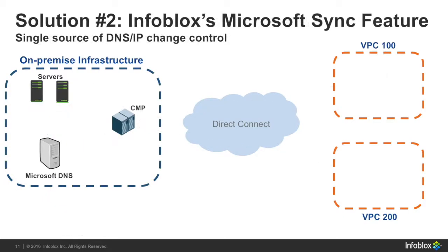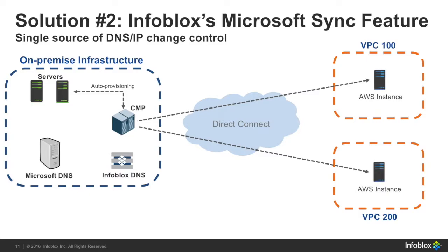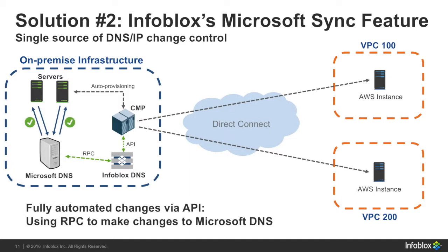A solution that we've come up with is to actually insert an Infoblox DNS instance on-premise. The cloud management platform can then go on its usual self to provision instances in AWS or on-premise. What it then does is talk via API to us — it can ask for the next available IP as well as inserting a DNS record in the authoritative zone, which is hosted in Microsoft. Infoblox here will run a Microsoft Sync to actually push the changes via RPC into Microsoft, and in doing so, it provides full resolution across the enterprise so these servers can resolve what's sitting on AWS instances or AWS VPCs.